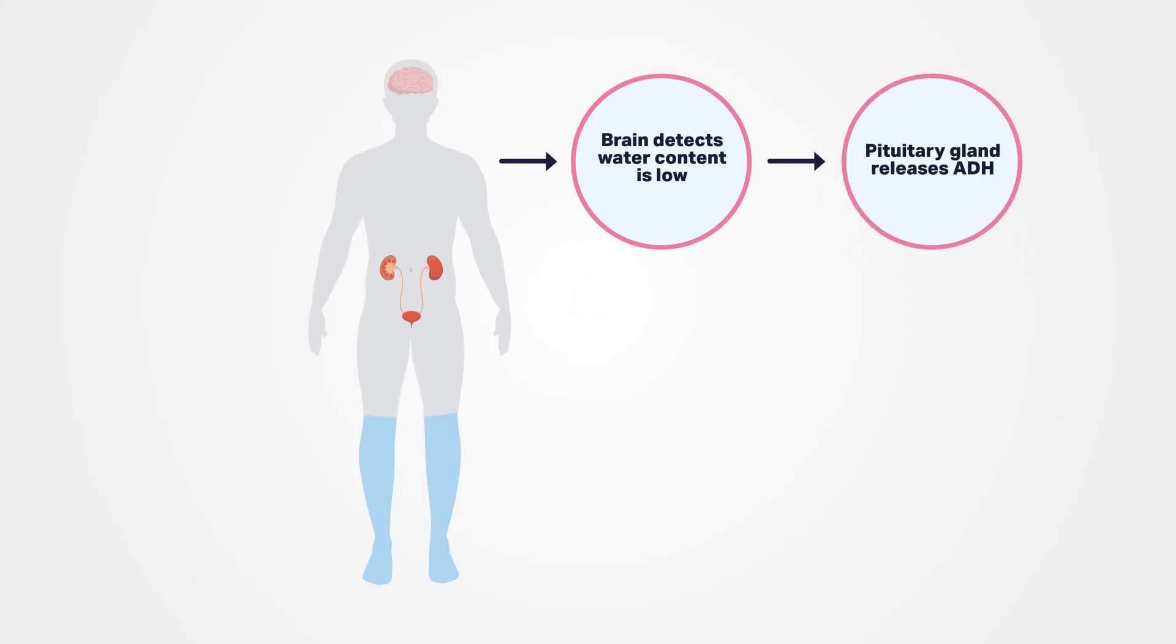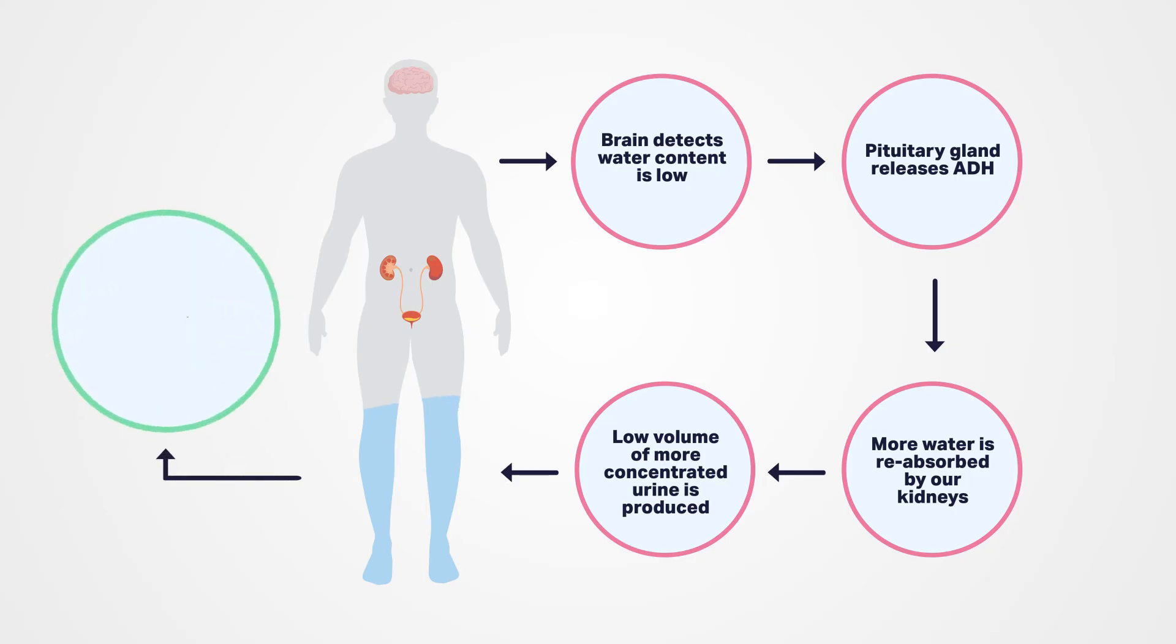The pituitary gland releases ADH, so more water is reabsorbed from the kidneys and more concentrated urine is produced. And the blood water content then returns to normal.